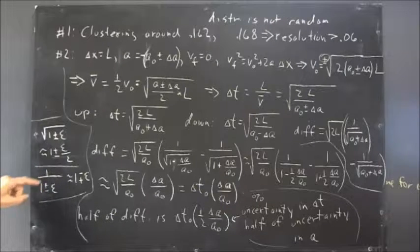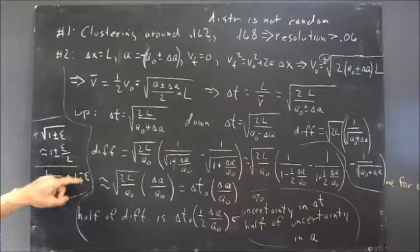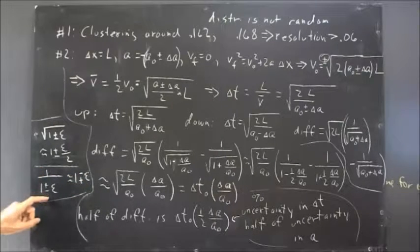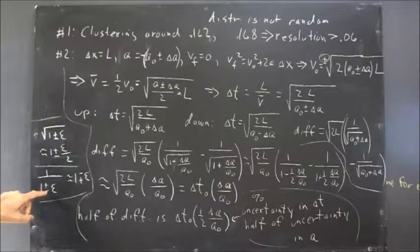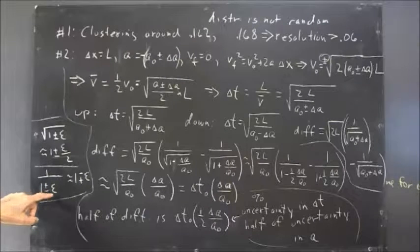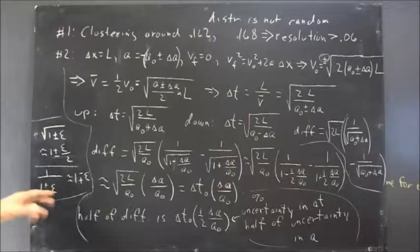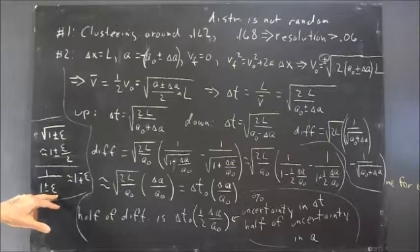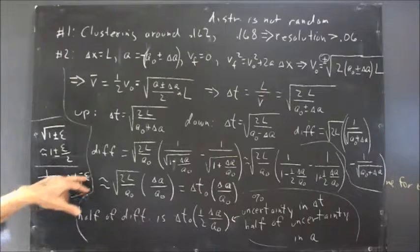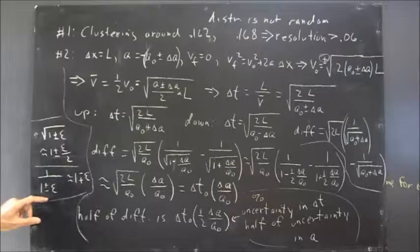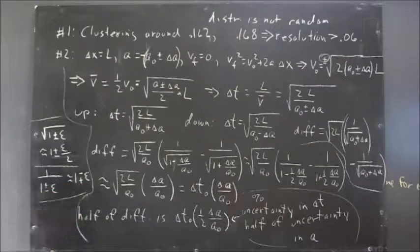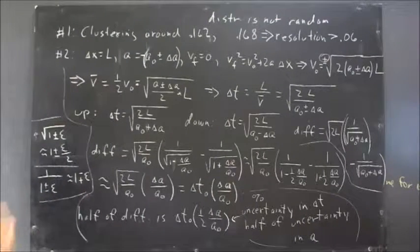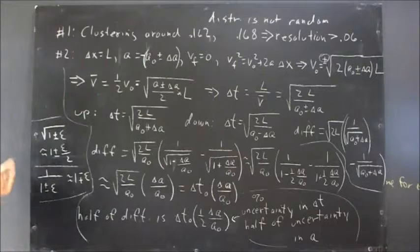And, also, 1 over 1 plus or minus epsilon is 1 minus or plus epsilon. For example, 1 over 0.99, which would correspond to epsilon equals minus 0.01, subtracting a 0.01 from 1. That's going to give you about 1.01. 1 over 0.99 is close to 1.01. Check it out for yourself. Convince yourself. Use your tools of calculus to convince yourself that this is true.